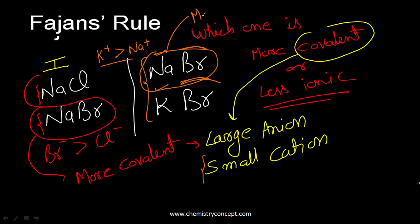So this is Fajan's rule. It determines whether a given compound is more ionic or more covalent. Something which is more covalent would be less ionic. For being more covalent, there should be a large anion and small cation. For being ionic, the reverse is true: small anion and large cation.